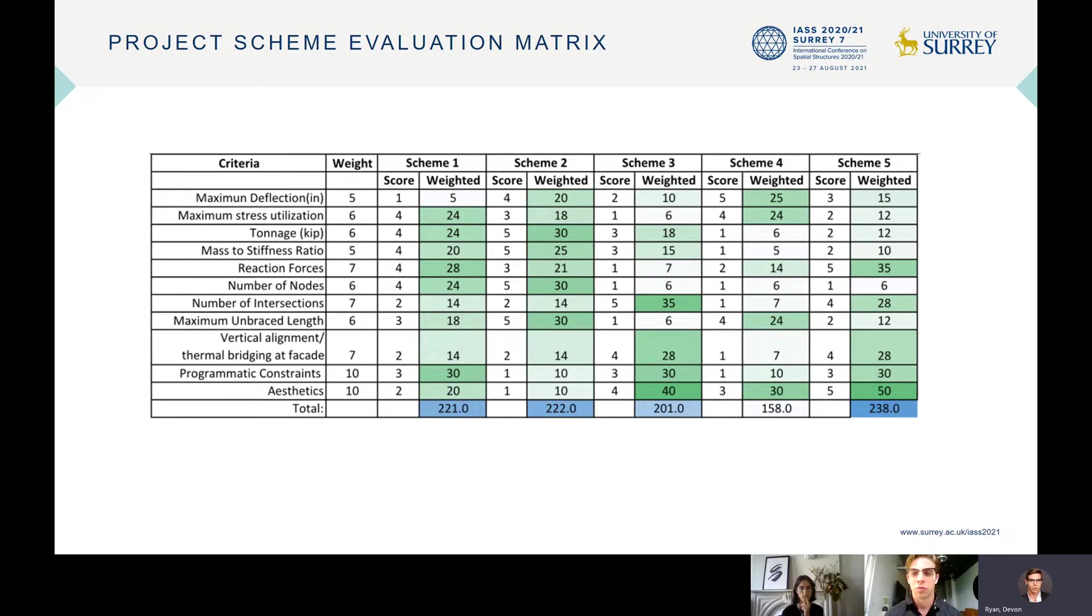And through discussions with the various project stakeholders, a weight and score was assigned to the various criteria for each scheme. The summary concludes that, though Scheme 5 was not the most structurally efficient, the project-specific importance of aesthetic preference predominated. So, Scheme 5 was selected to move forward into the next phase of analysis and design development.